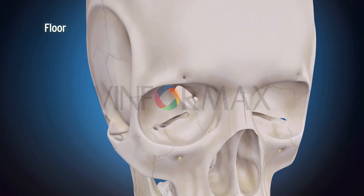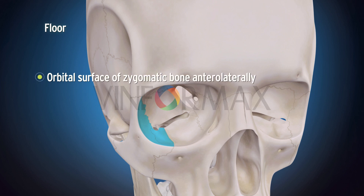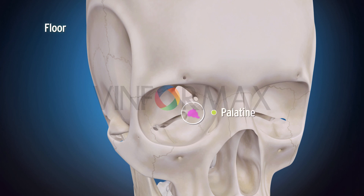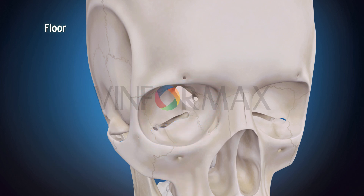The floor is formed by the orbital plate of maxilla, the orbital surface of zygomatic bone anterolaterally, and the palatine bone posteriorly. The floor separates the orbital cavity from the maxillary air sinus and is marked by the infraorbital groove for the passage of the infraorbital nerve.